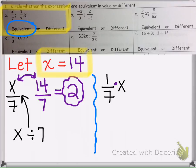So we have one-seventh times 14. When we multiply with fractions, we can multiply straight across. We do not need a common denominator.